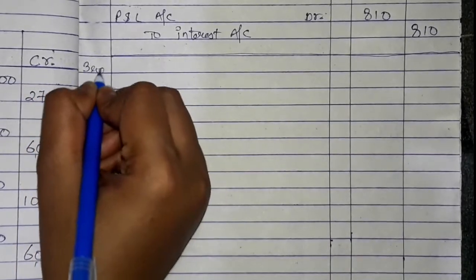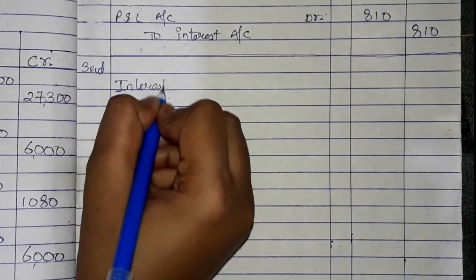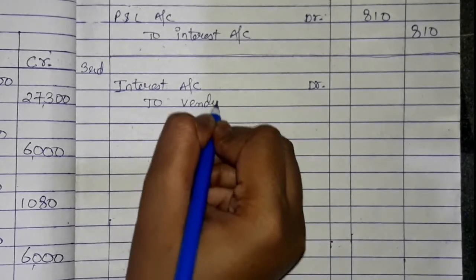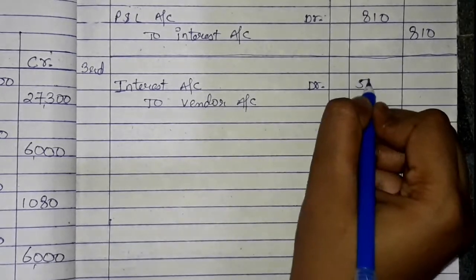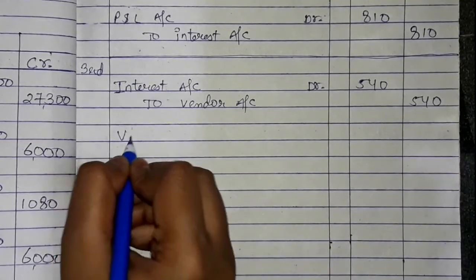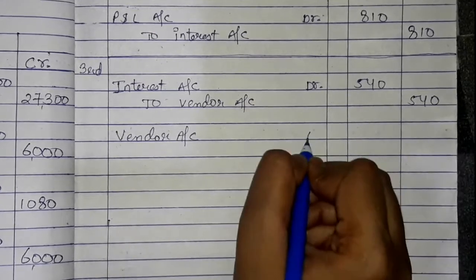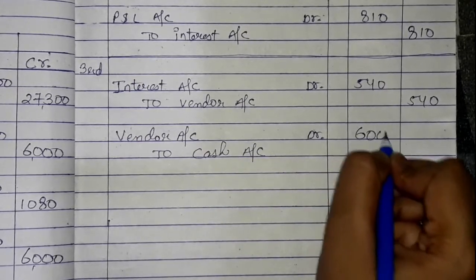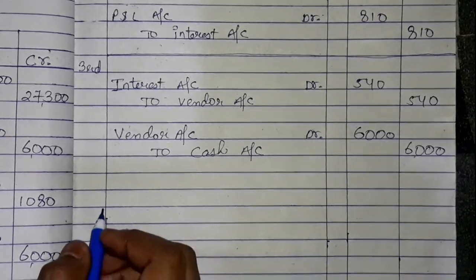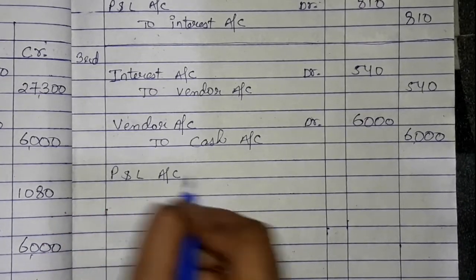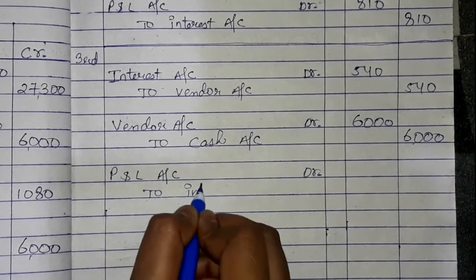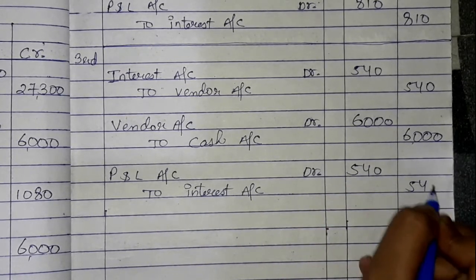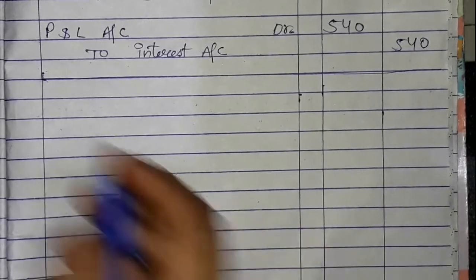For the third year: Interest Account debited to Vendor Account for 540. Then the installment: Vendor Account debited to Cash Account for 6,000. Then Profit and Loss Account debited to Interest Account for 540. This is our third year entry.